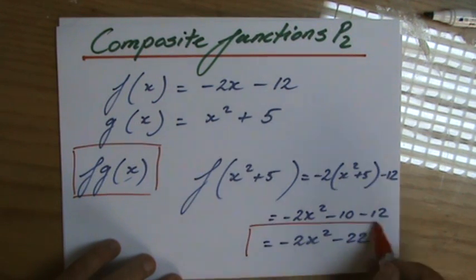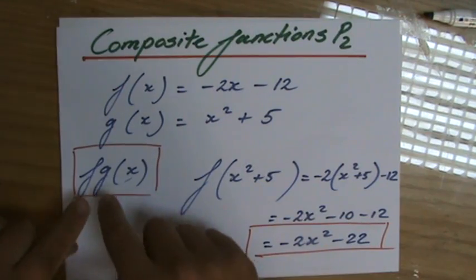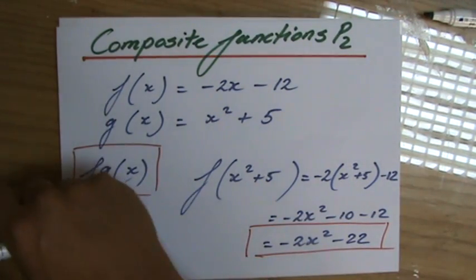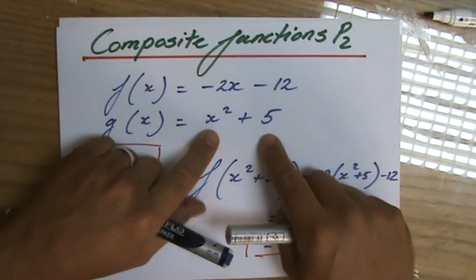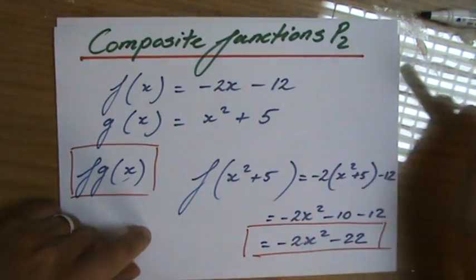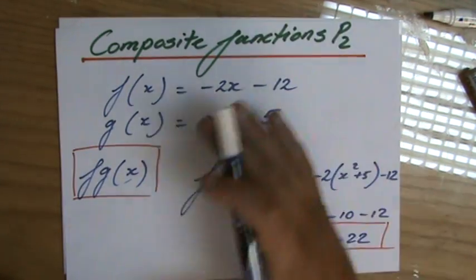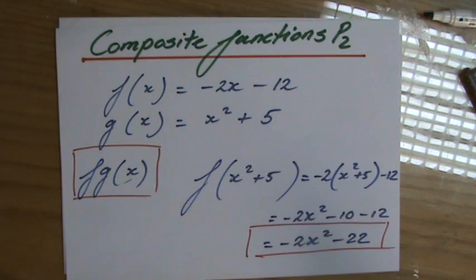That's the composite function, where we say fg(x) means putting g in f. So x squared plus 5, put it in f for x. Now, the language is difficult, and the maths, hopefully you already start to see now, is quite straightforward. Okay, let's go to the next video.